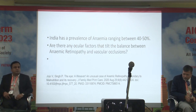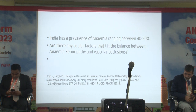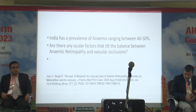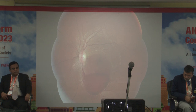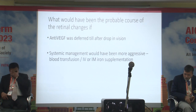We have a large number of young girls in our society with anemia ranging from hemoglobin 4 to 9 who are going about their daily work but we don't see them often in our OPDs. We discuss anemia along with diabetes or hypertension, but anemic retinopathy per se is perhaps not being addressed enough. Are there any ocular factors that can tilt towards developing anemic retinopathy or vascular occlusions? What would have been the cause of retinal changes if anti-VEGF was not given? Would more aggressive systemic management of anemia alter the course of these diseases?